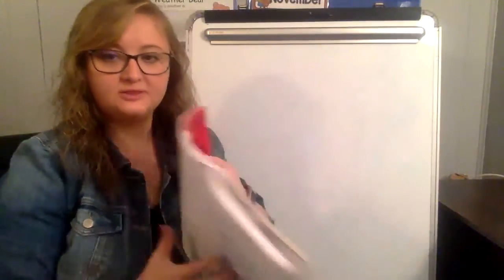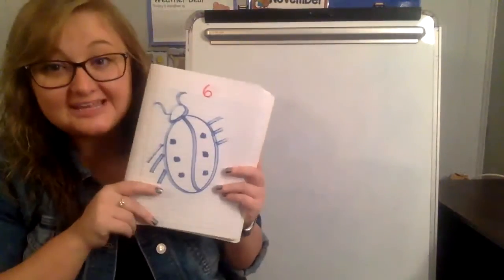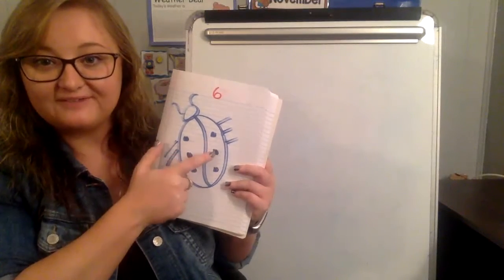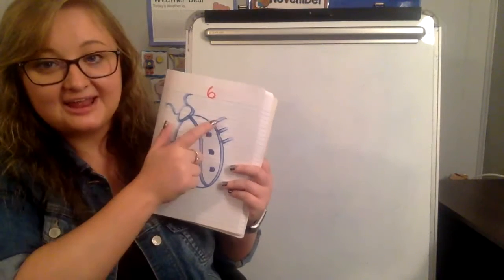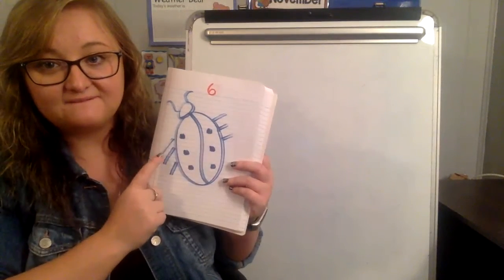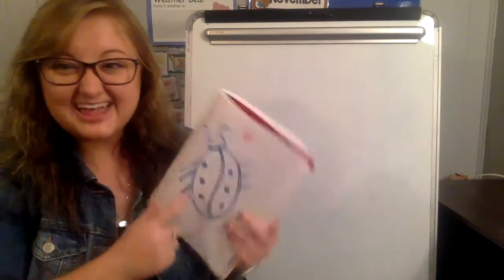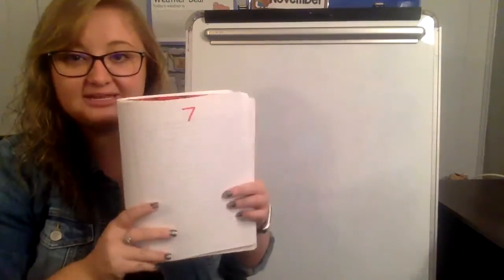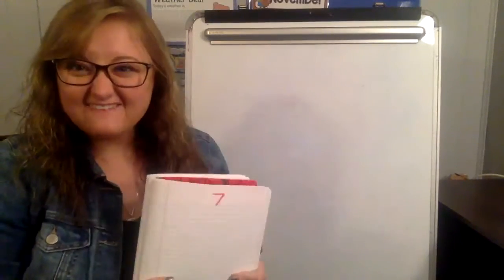Last week, we worked on the number six and we drew a ladybug with one, two, three, four, five, six dots and one, two, three, four, five, six legs. So if our number last week was six and we add one more, our number this week is the number seven.